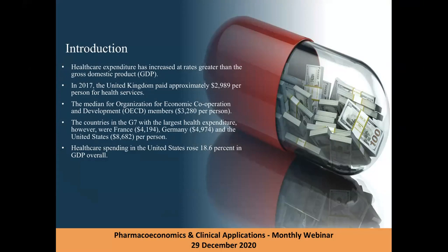Healthcare expenditure has increased over the past few decades. For example, in 2017 the United Kingdom paid about $2,989 per person for health services. The OECD median was about $3,280 per person in 2018. G7 countries with the largest health expenditure paid between $4,194 and $8,682 per person — the highest being the United States. U.S. healthcare expenditure rose to about 18.6 percent of GDP in 2019.